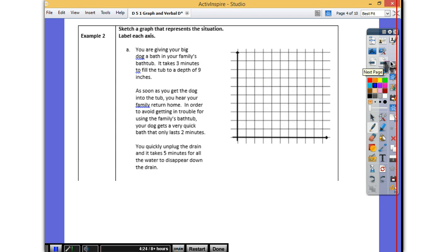So now let's label our own graph and draw our own line on the graph. It says you are giving your dog a bath in your family bathtub. It takes three minutes to fill the tub to a depth of nine inches. You hear your family return home. For giving your dog a bath in the family bathtub, your dog gets a very quick bath that only lasts two minutes. You quickly unplug the drain and it takes five minutes for all the water to disappear. What do we need to do first? Label.